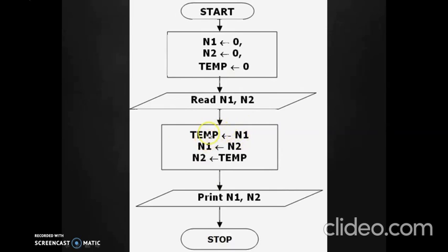After storing n1 in temp and moving n2 into n1, you then move whatever was stored in temp — the old value of n1 — into n2. So at the end of this operation, n1 will now contain the value that was originally in n2, and n2 will contain the value that was originally in n1, which was temporarily stored in the temp variable. When you print the two outputs, you will see the swapped values. It looks a little confusing initially, but if you go through it slowly once again it will be very clear — it is a very simple algorithm.